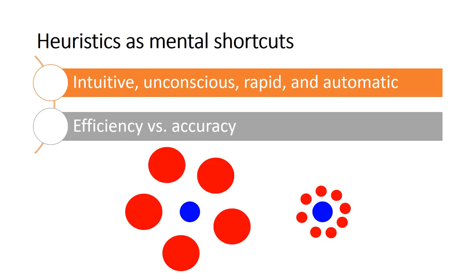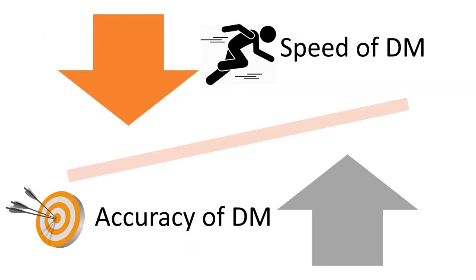Heuristics can go wrong sometimes. Looking at the image here, you may see that the blue dot on the left seems smaller than the one on the right, but they are actually the same size. If you get it wrong, you are not alone — many people, regardless of their intelligence or leadership position, get it wrong as well. To make decisions efficiently, our brains take mental shortcuts, using heuristics to navigate the complex world. In doing so, we save precious cognitive resources for the next decision. But there is a trade-off between efficiency and accuracy.